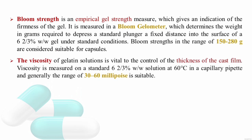Viscosity is related to the wall thickness of the capsules — it is vital to control the thickness of the cast film. Bloom strength measures the strength of the shell, while viscosity determines the thickness. Viscosity is measured on a standard 6.67 percent weight-by-weight gelatin solution at 60 degrees Celsius in a capillary pipette and is generally measured in millipoise. A range of 30 to 60 millipoise is suitable for capsule manufacturing.